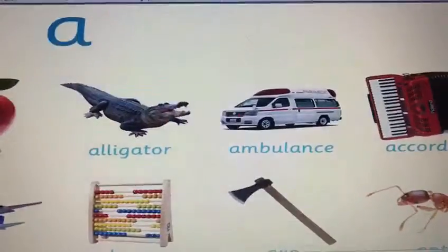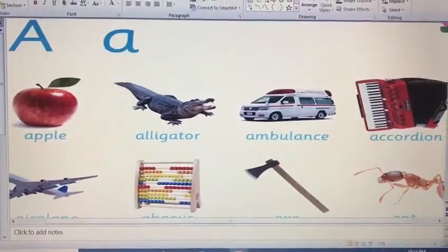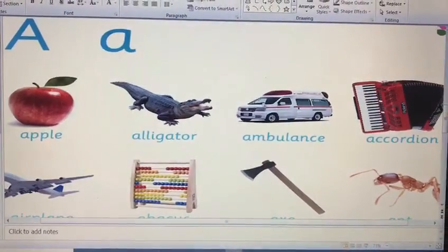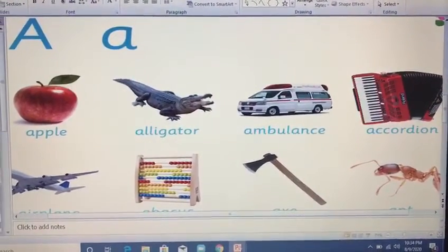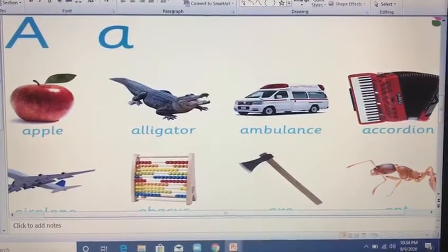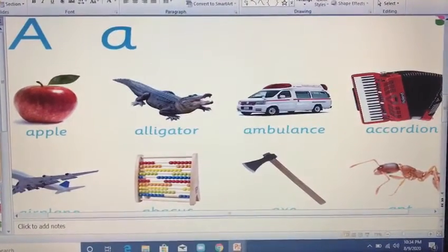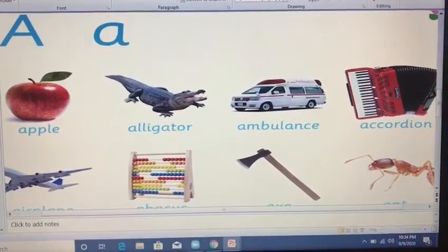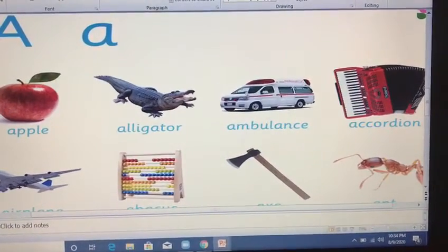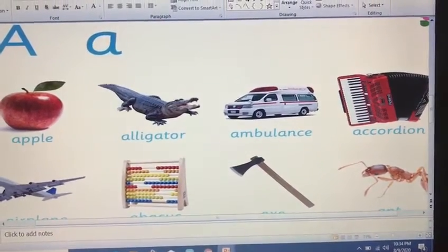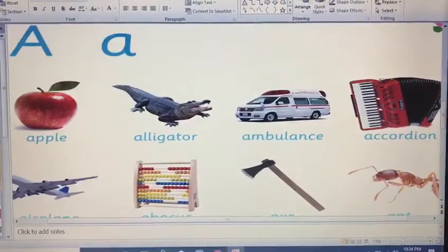A for apple, A for alligator, A for ambulance, A for accordion, A for airplane, A for abacus, A for ax, and the last is A for 'and'.